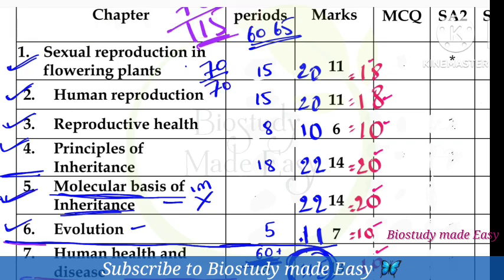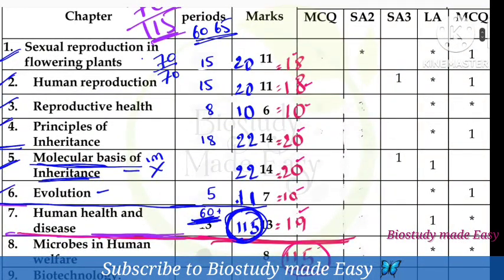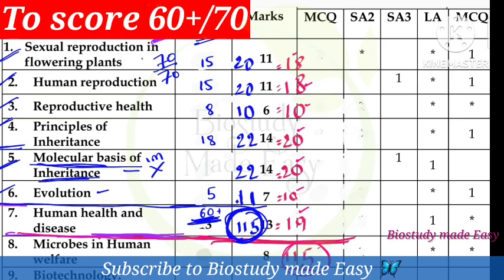Sexual reproduction: 11 marks. Human reproduction: 11 marks. Reproductive health: 5 marks. Principles of inheritance and variation: 11 marks. Molecular basis of inheritance: 10 marks. For the evolution chapter and human health and diseases, it is an easy chapter to score in.